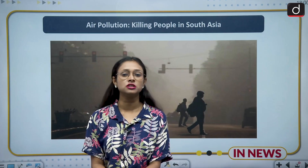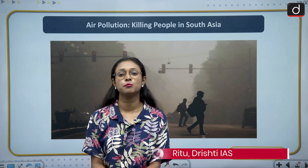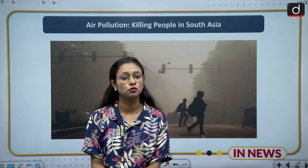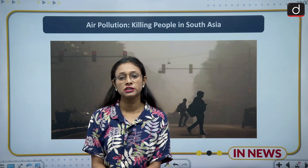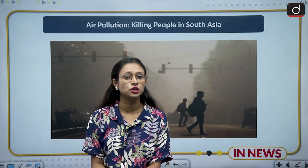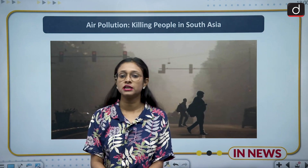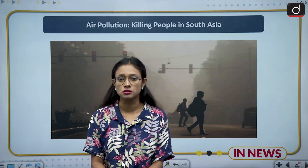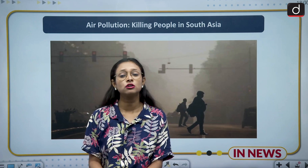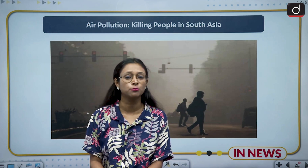Hello everyone, welcome to the new series of Drishti IAS. I am Brito and today we are going to discuss an important topic of environment — air pollution — and how it is killing so many people in South Asia. We already know there are different kinds of pollution: soil pollution, water pollution, air pollution, and noise pollution. Among all these, air pollution is becoming the most dangerous one, and despite knowing this, we are not able to mitigate it.